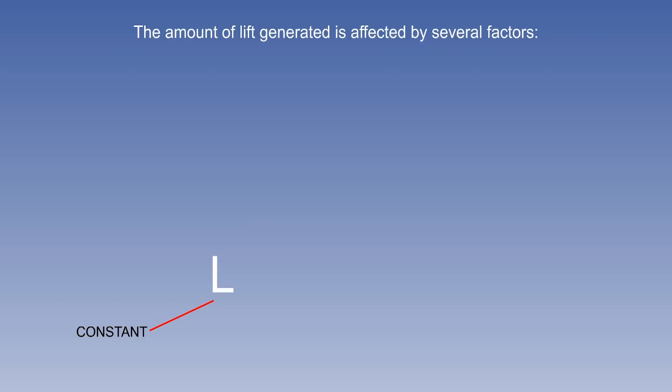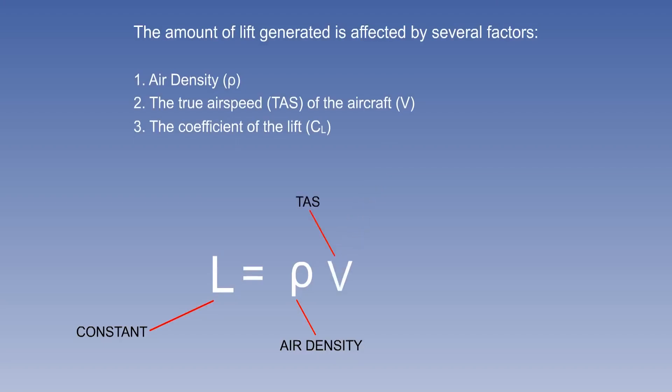Several factors will affect the amount of lift generated. First, air density, denoted by the symbol rho. Next, the aircraft's true airspeed or TAS enters the equation as V. The next factor is the coefficient of lift. The final factor is the wing area.